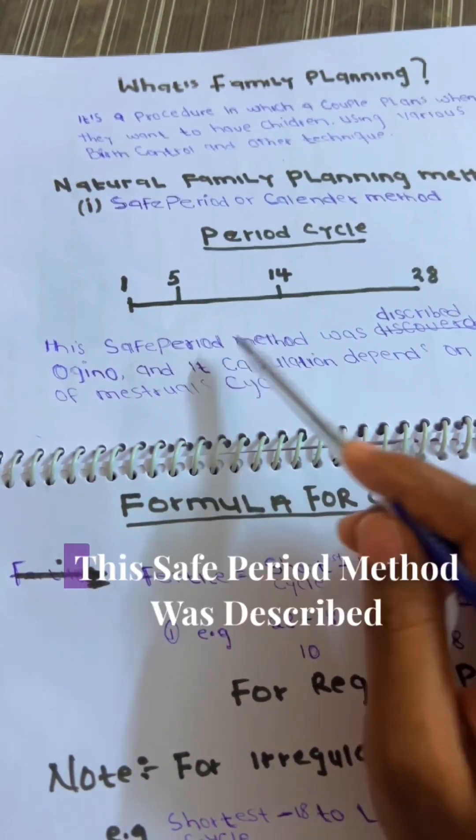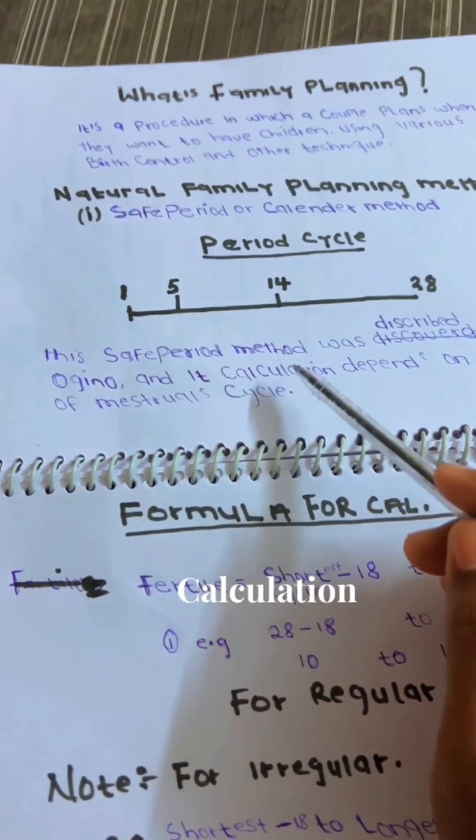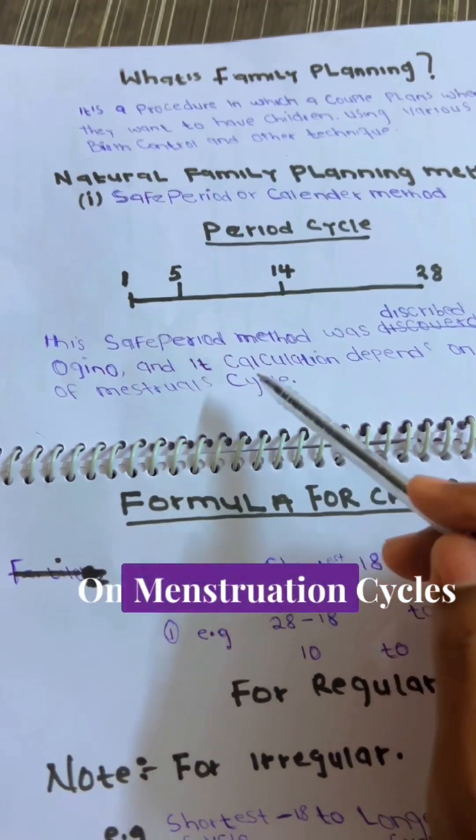This safe period method was described by a scientist called Ogino, and its calculation depends on the menstruation cycles.